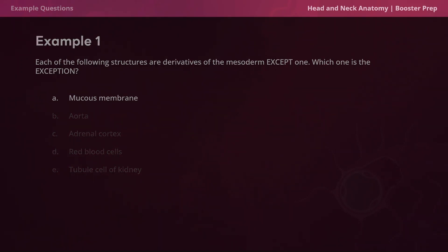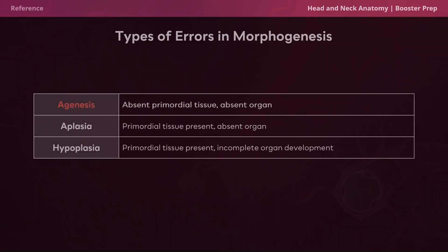Now we're moving on to types of errors in morphogenesis. Agenesis is an absent primordial tissue which causes an absent organ. Aplasia is a primordial tissue present but an absent organ. And hypoplasia is a primordial tissue present and an incomplete organ development. Agenesis, aplasia, hypoplasia — get it? Got it? Good.